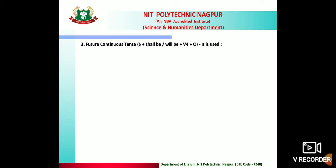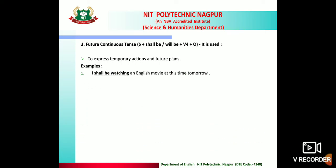Future continuous tense — formula: Subject + shall be/will be + V4 + Object. It is used to express temporary actions and future plans. For example: 'I shall be watching an English movie at this time tomorrow' — 'shall be watching' indicates future continuous tense, meaning I will be watching an English movie tomorrow at this time.